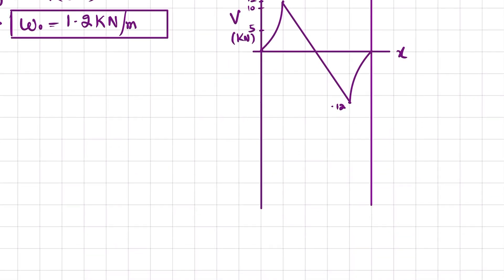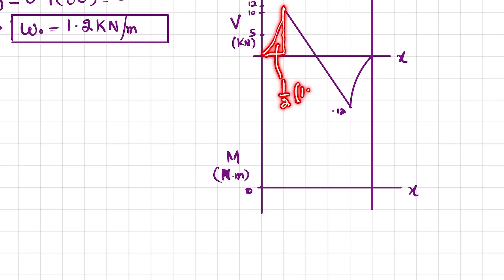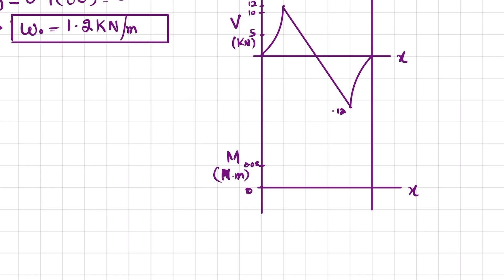Now we draw the bending moment diagram. The x-axis is the pin length and the y-axis is moment in newton-meters. At point A, moment is zero. The first area under the shear force diagram is approximately triangular: (1/2) × 12 × 0.02 m = 0.08 newton-meters. Since the shear was second degree, the moment curve is third degree here.